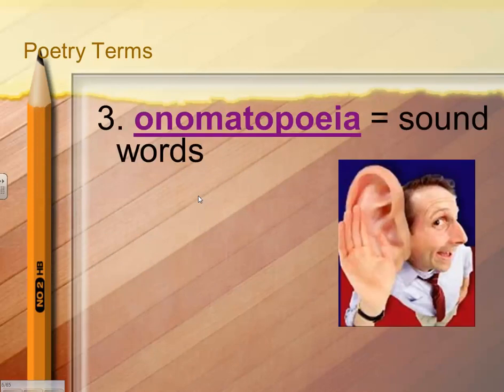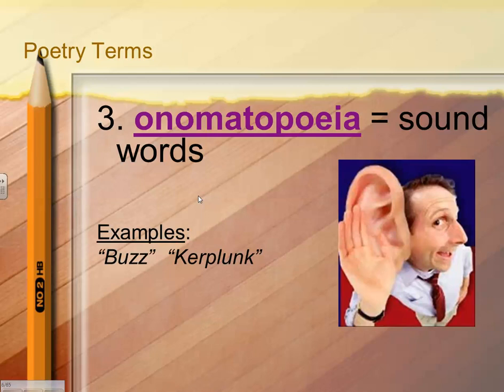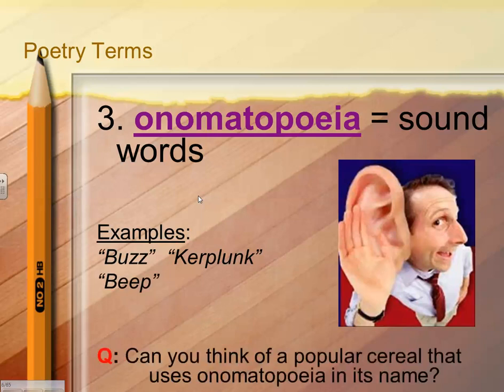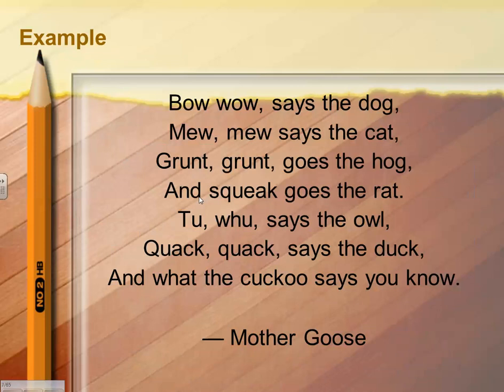The next word is onomatopoeia — sound words, words that come from a sound that sounds like the sound itself. Like buzz, kerplunk, beep. Can you think of a popular cereal that uses onomatopoeia in its name? I'll give you a hint: it snaps, it crackles, and it pops. An example is there, so you can pause the video if you need to.